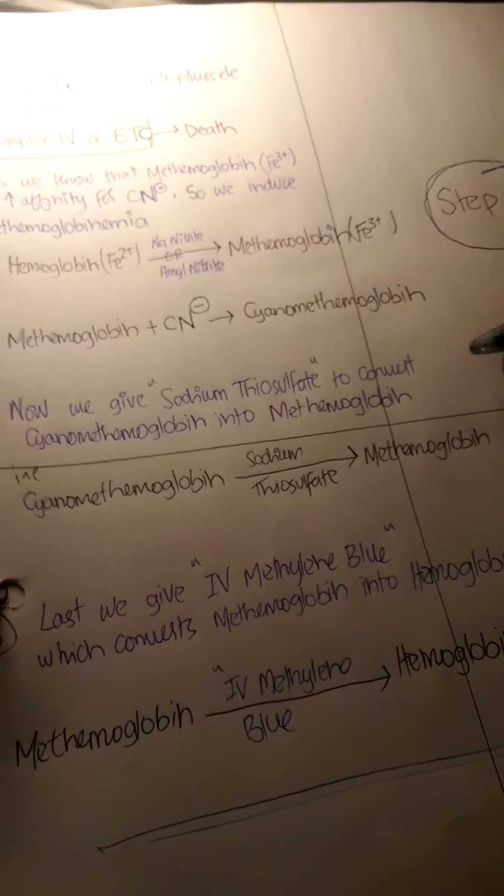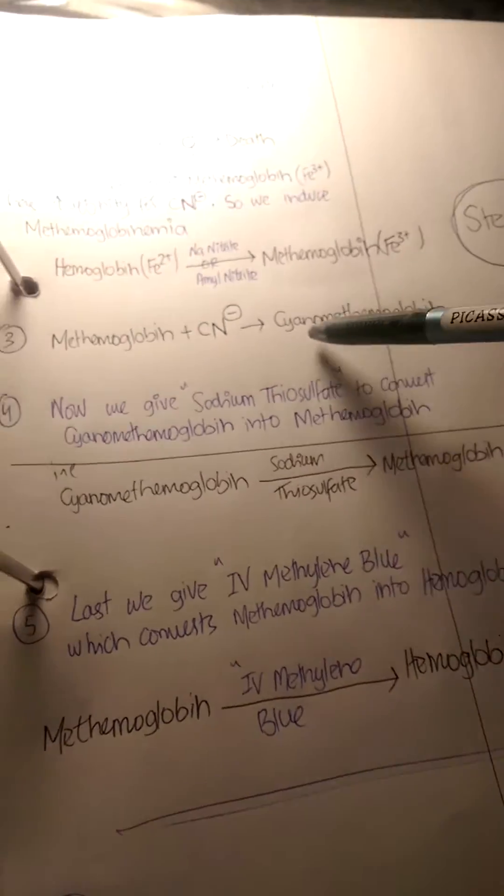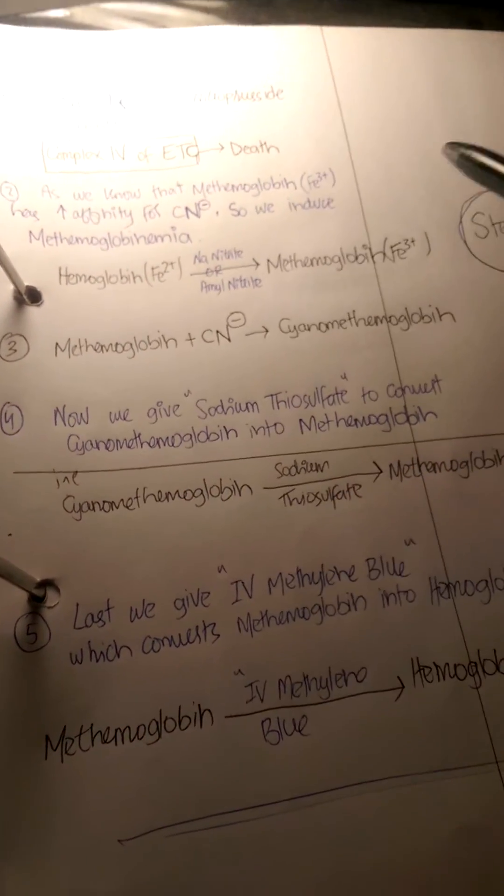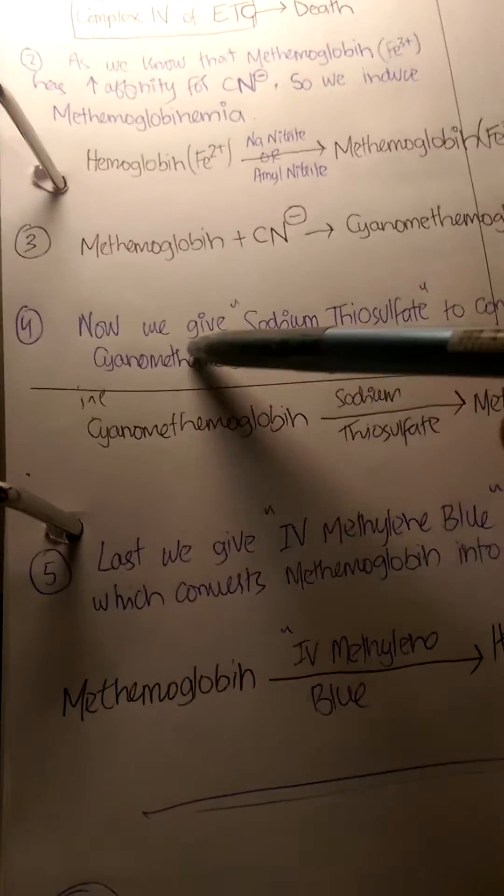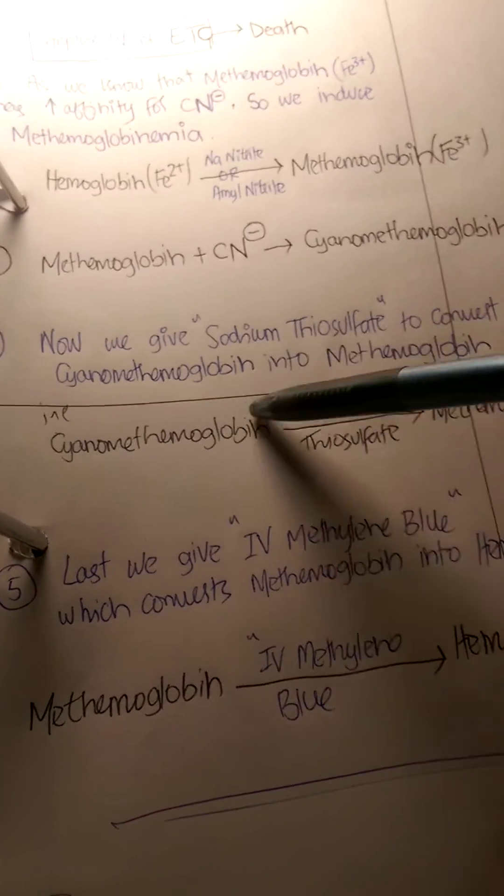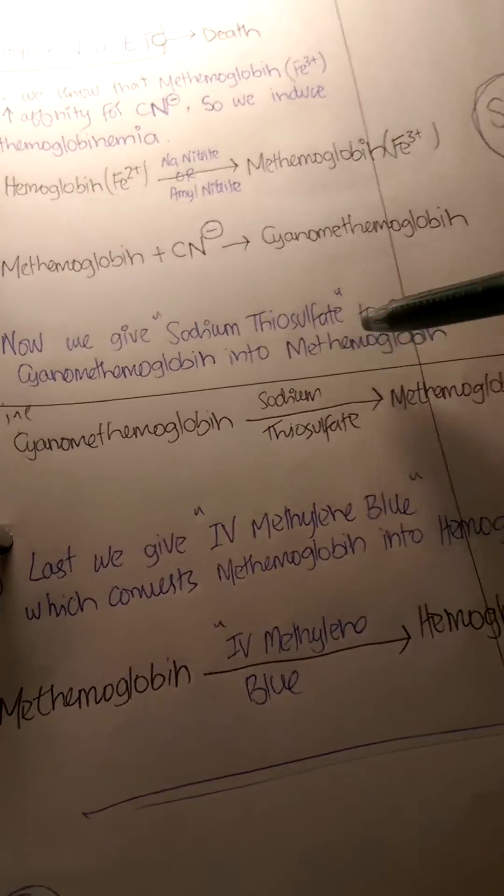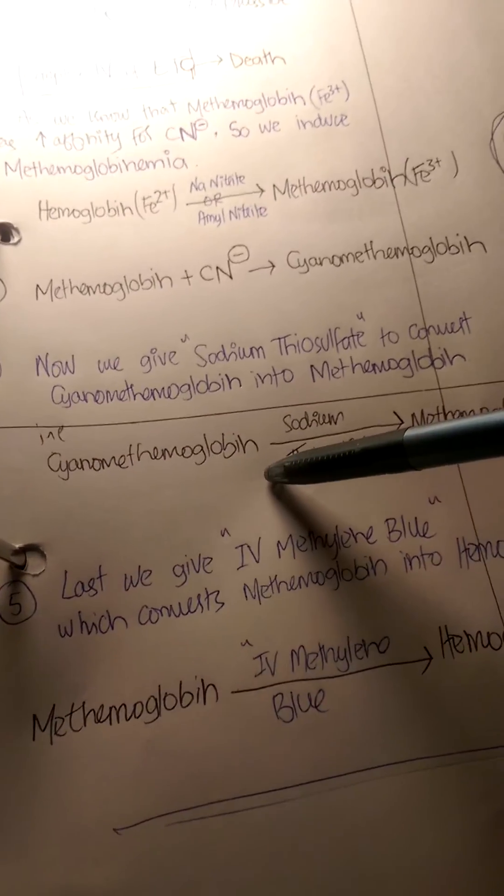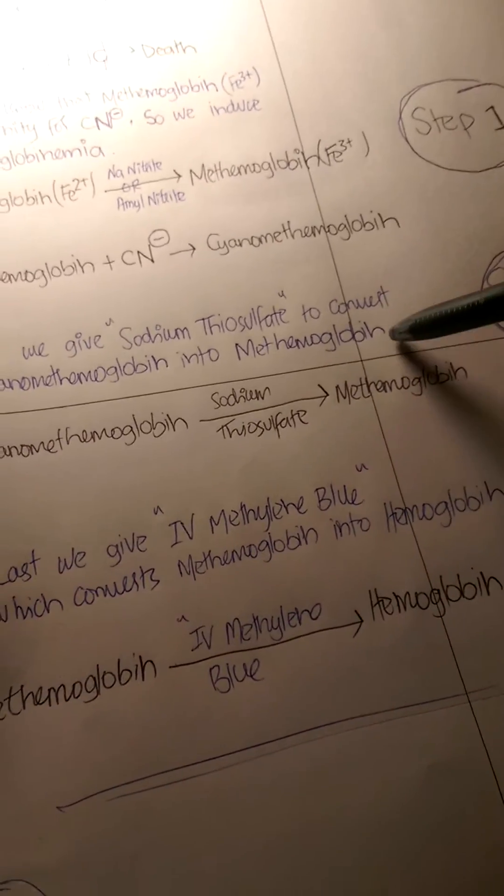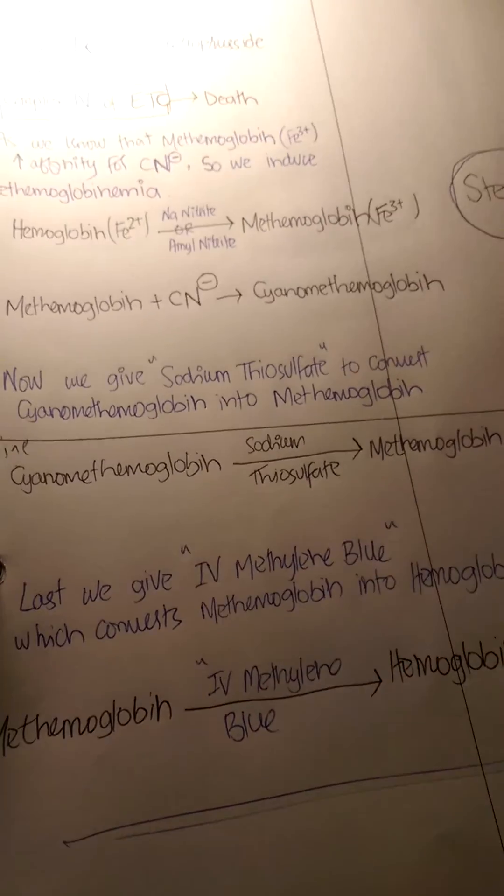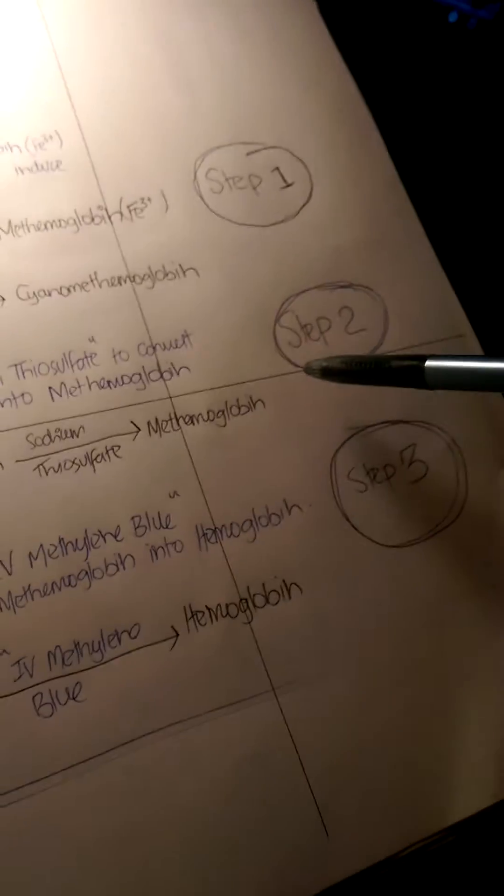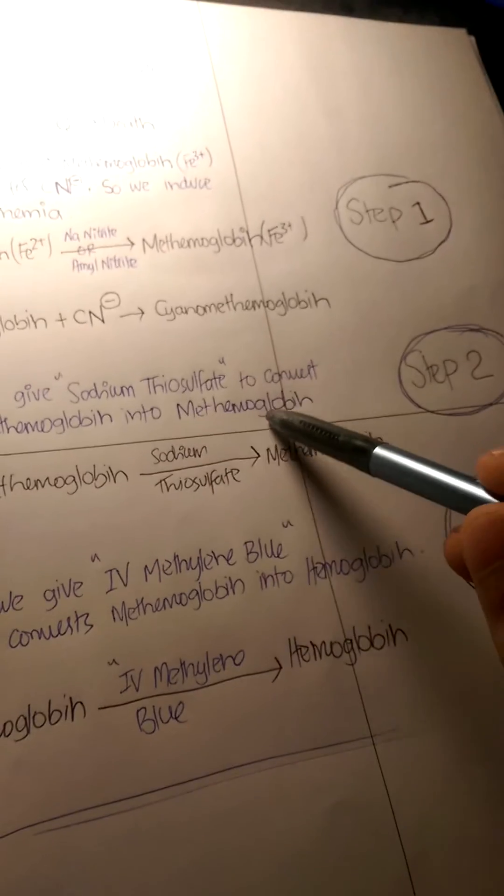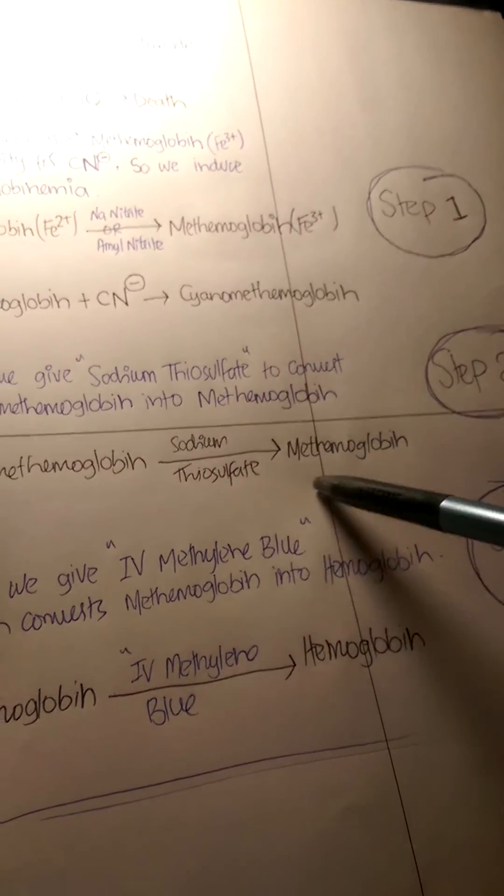Now we move to step two. We don't want cyanomethemoglobin in the body either, so we give another drug: sodium thiosulfate. This converts cyanomethemoglobin back into methemoglobin. We've now lost the cyanide ions in step two, but we're left with methemoglobin again.